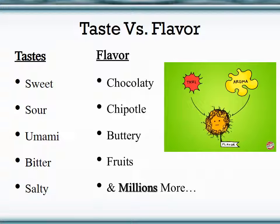Another example: a peppermint candy that is sweet — that's its taste. The peppermint is minty, so you could say the flavor is minty sweet. In that case, the flavor of the peppermint is minty or minty sweet, while the taste of it is sweet.